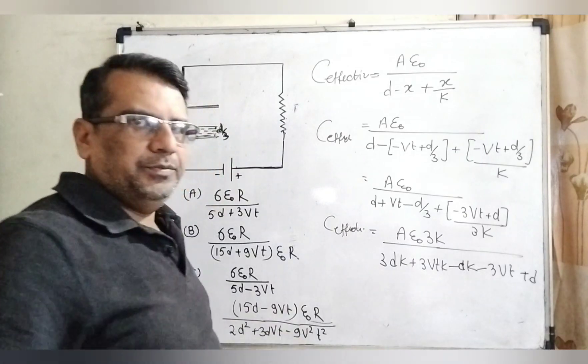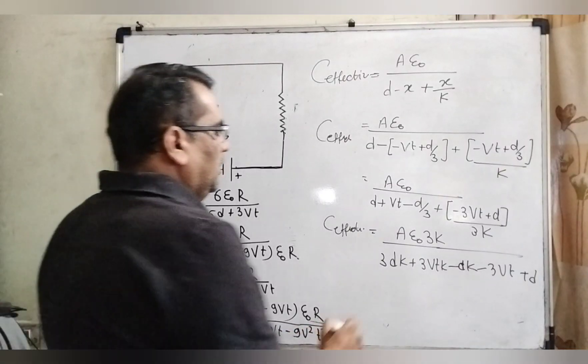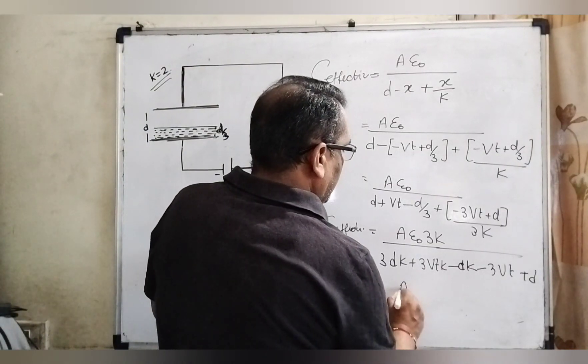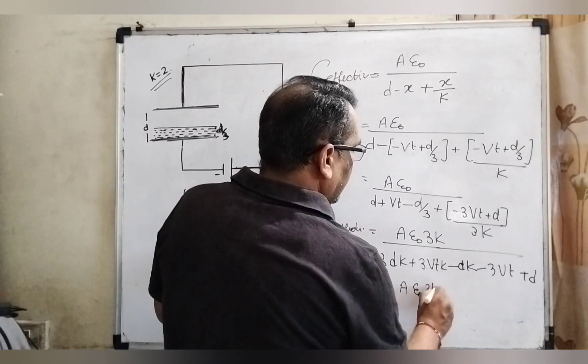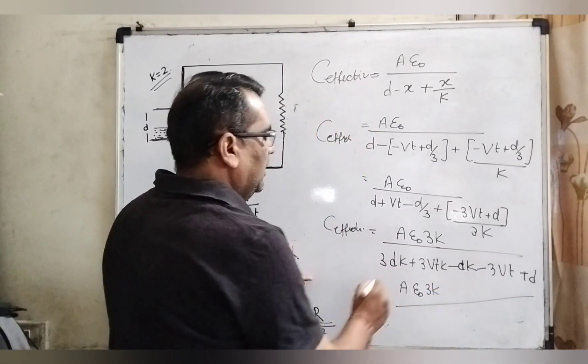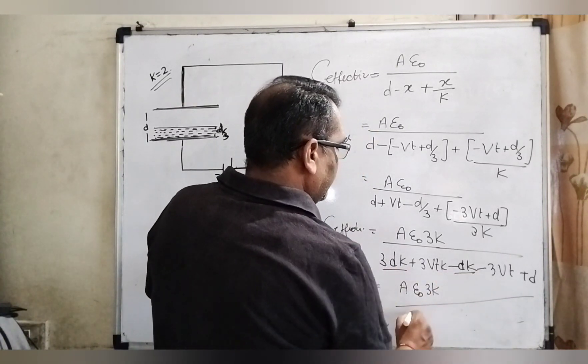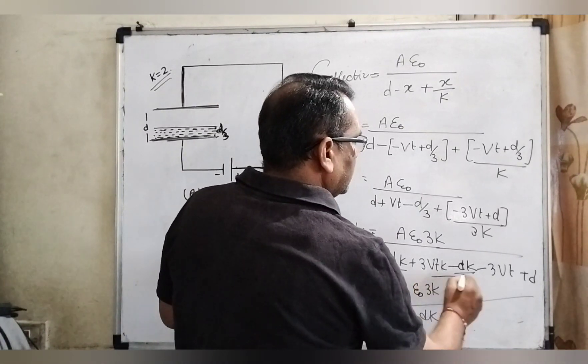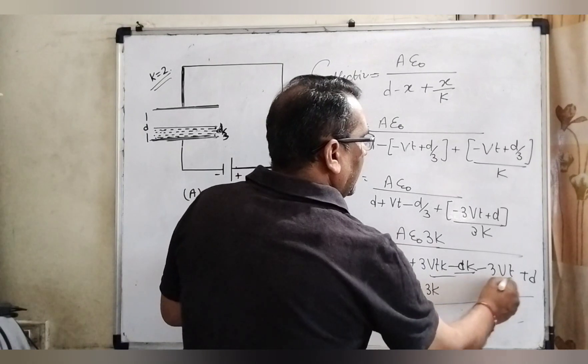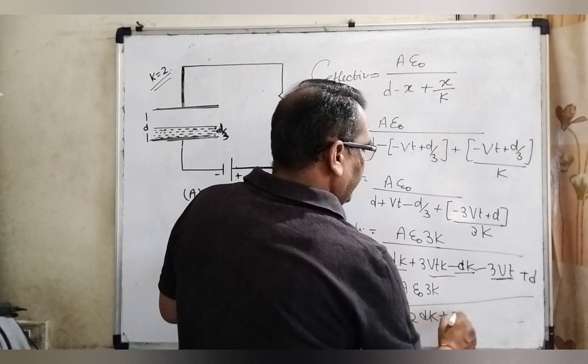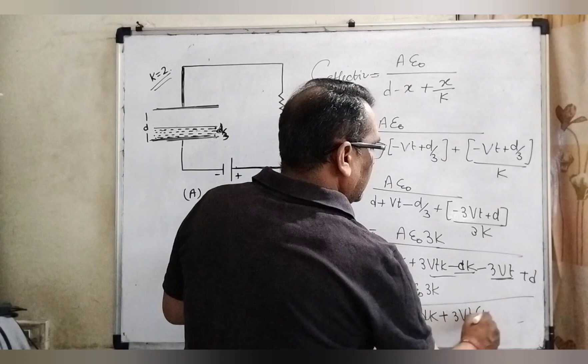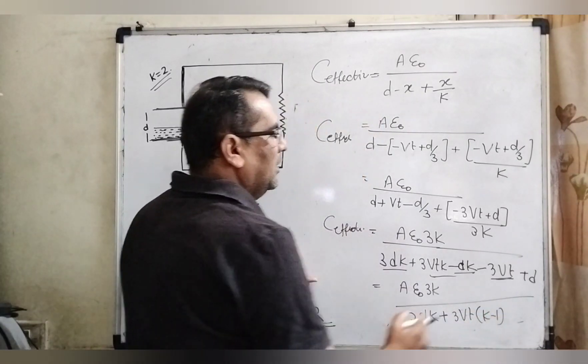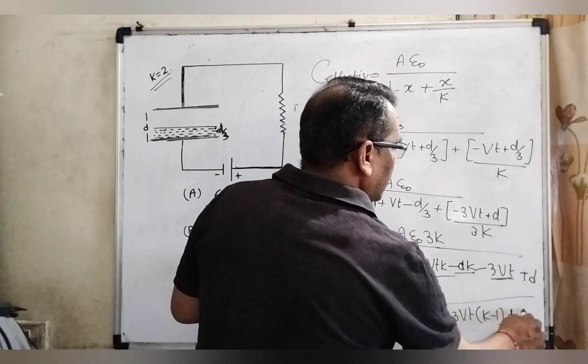Here C equals A epsilon 0 over 3k into 3dk minus dk means 2dk, here 3Vtk and 3Vt. 3Vt get common k minus 1 and last remaining d.